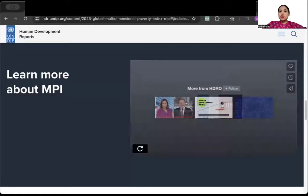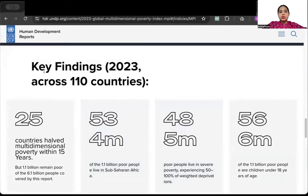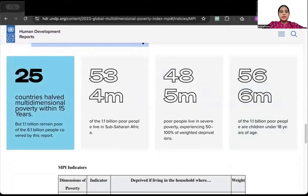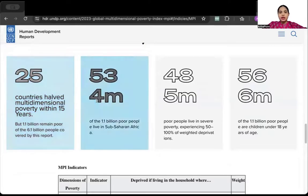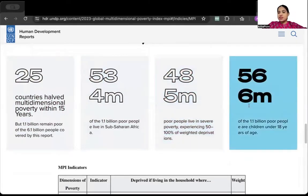So basically this is already on the website and it is very interesting to understand more about it. Now you can also look at the key findings. There are 25 countries that have halved their multidimensional poverty index within 15 years. There are 1.1 billion poor people, 34 million live in sub-Saharan Africa. 483 million poor people live in severe poverty, and 566 million of 1.1 billion people are children who are under the age of 18.